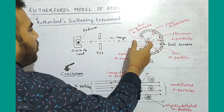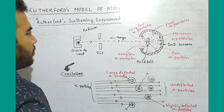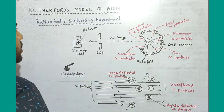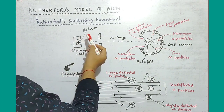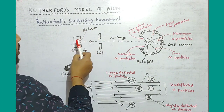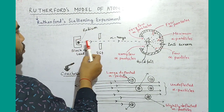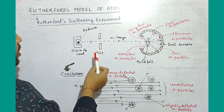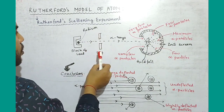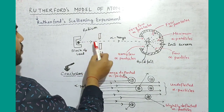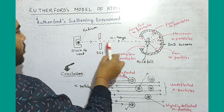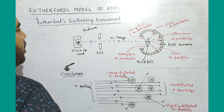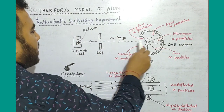These metal foils used to be used in this experiment. The radioactive substance emits radiation, and the slit is used to produce a fine beam of alpha rays.